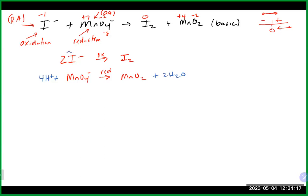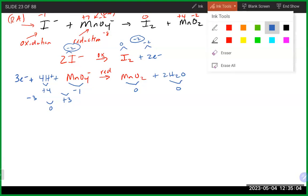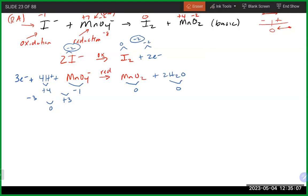Balance charge with electrons. Iodine half reaction: left is −2, right is 0 — add 2 electrons to the right (product side, consistent with oxidation ✓). Manganese half reaction: left is +4 + (−1) = +3, right is 0 — add 3 electrons to the left (reactant side, consistent with reduction ✓).